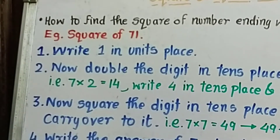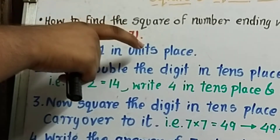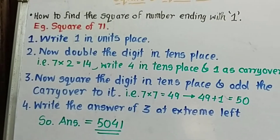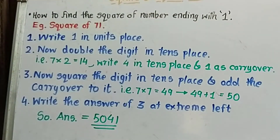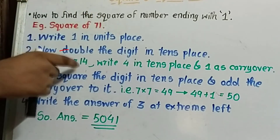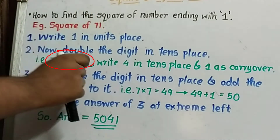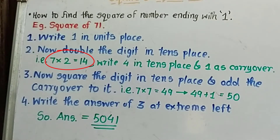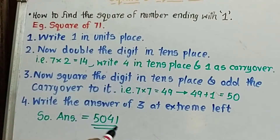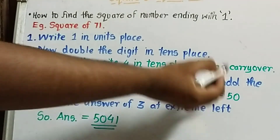First, write 1 in the units place. Then take the 10th digit, which is 7, and double it: 7 into 2 equals 14. Write 4 in the 10th place and take 1 as carryover.